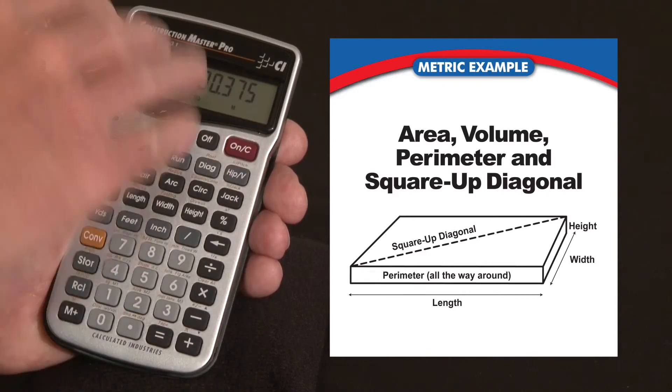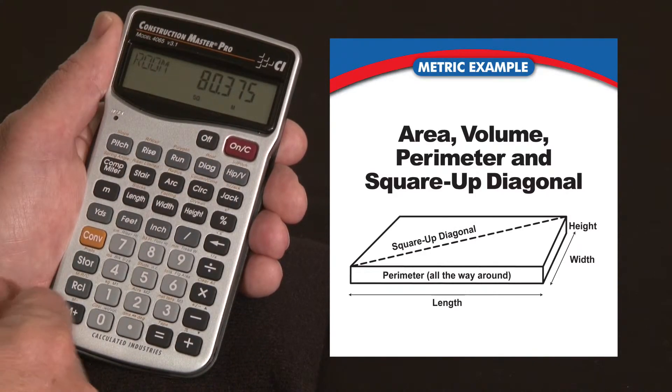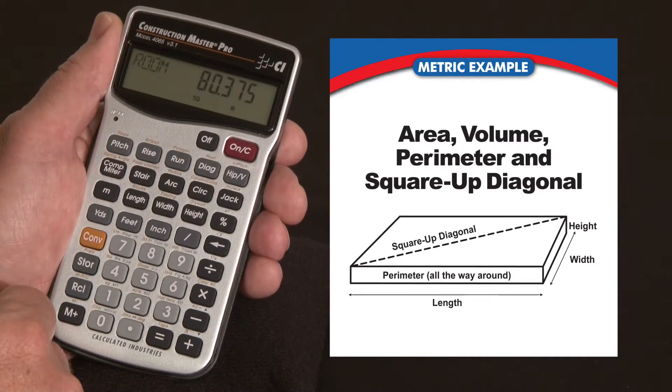Press it again. Now the wall plus the ceiling is going to be 80 square meters. That tells you how much material you're going to need to cover that surface.